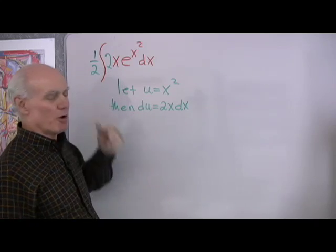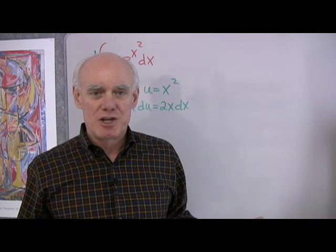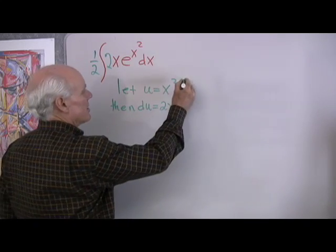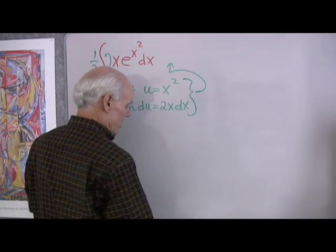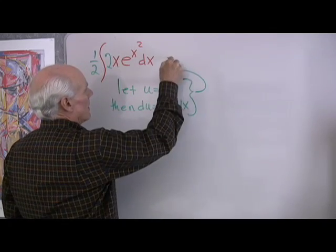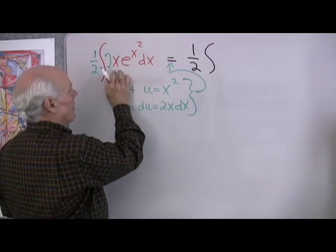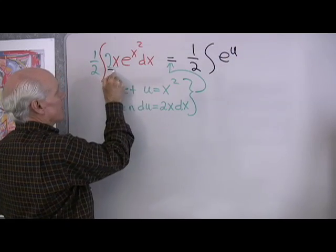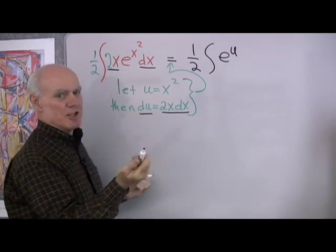So by putting a 2 inside here and a 1 half out in front where they're both factors, really what I've done is multiplied by 1. So I haven't changed the value of this, but I have set it up so that I can take this substitution right here, put it in, and rewrite this as 1 half the integral of e to the u, and then I have 2x dx, which is exactly du.